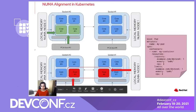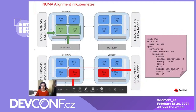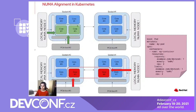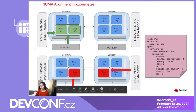To illustrate aligned and non-aligned resource allocation, let's consider a simple scenario. We have a system with two NUMA nodes. Consider a workload requesting one SR-IOV virtual function and two CPU cores. In the first diagram, all the resources are aligned on the same NUMA node, which will lead to optimum performance. In the second scenario, the resources are not allocated from the same NUMA node, which can lead to underperformance.